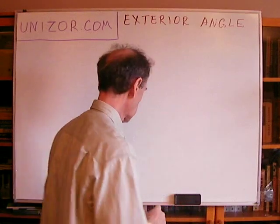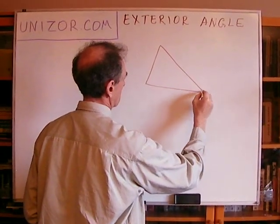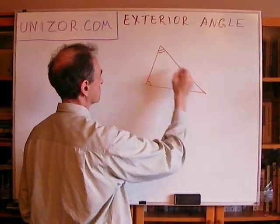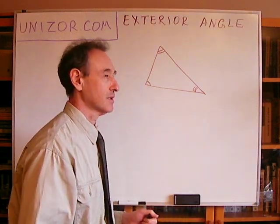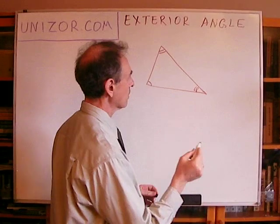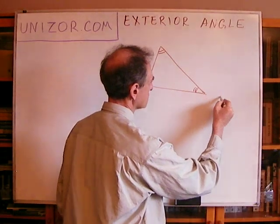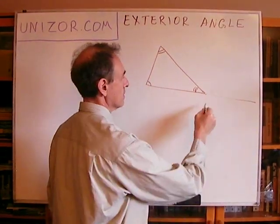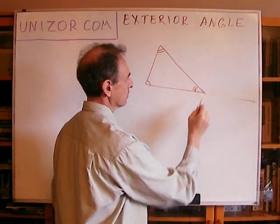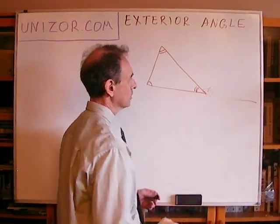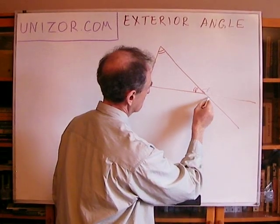First of all, what is an exterior angle? Consider you have a triangle, and these angles are, for obvious reason, called interior angles. An exterior angle is something different. Consider you are extending one of the sides beyond the vertex in some direction. Then, the continuation of this side with one other side from the same vertex actually makes an angle which is called exterior. If I extend this particular side, this is also an exterior angle.